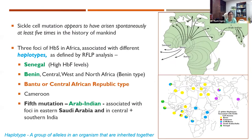Interestingly, the sickle cell mutation — an A-to-T transition at the sixth codon of the beta-globin gene — appears to have arisen spontaneously at least five times, as shown by studying different haplotypes via RFLP analysis. The haplotypes include Senegal, Benin, Bantu, Cameroon, and Arab-India. The Bantu haplotype is considered a very severe form, whereas those with Arab-Indian, Senegal, or Benin haplotypes have a relatively milder disease, possibly due to raised HbF levels observed in these haplotypes.